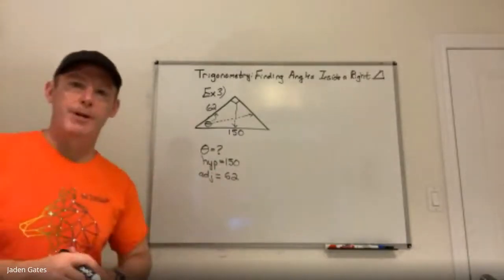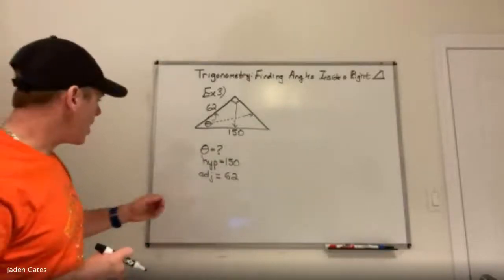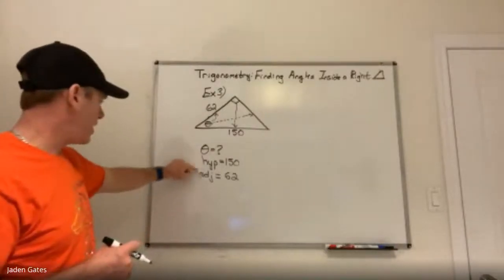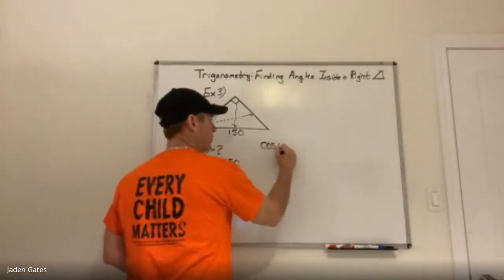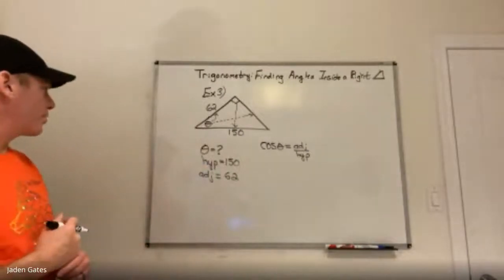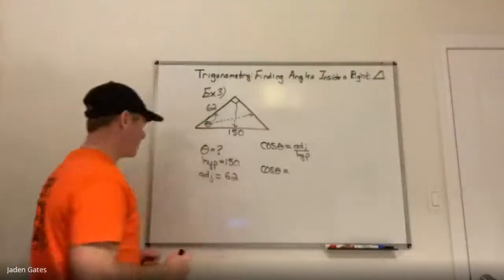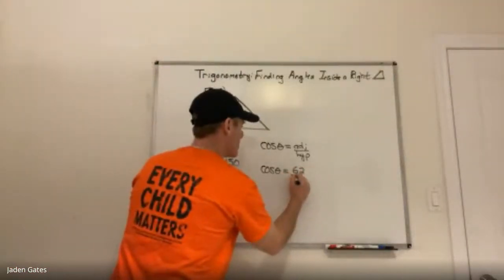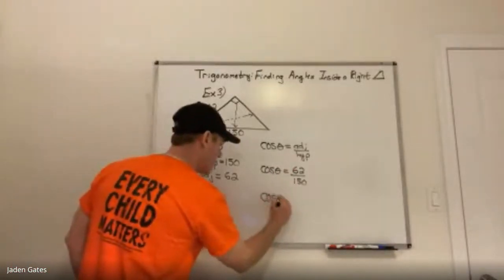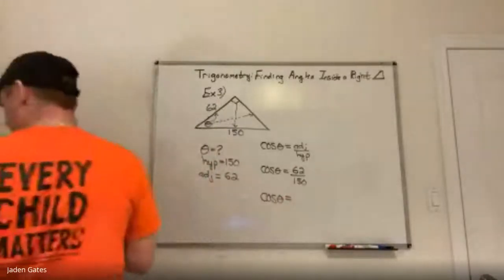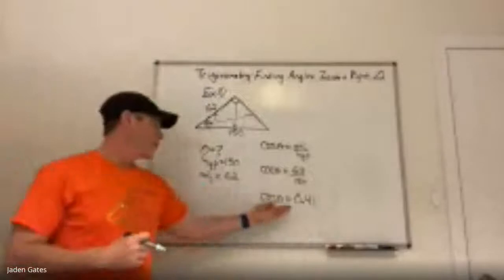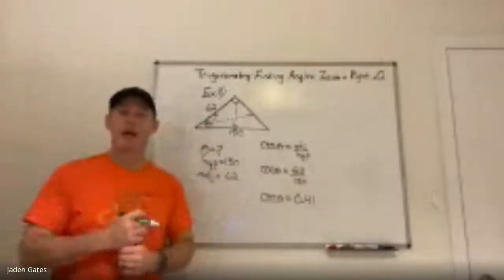Step two: which trig ratio? Sine uses opposite and hypotenuse — I don't have the opposite. Cosine uses adjacent and hypotenuse — I have both of those, so I use the cosine ratio: cosine theta equals adjacent over hypotenuse. Substituting in: 62 on top, 150 on the bottom. Simplifying that fraction gives approximately 0.41.